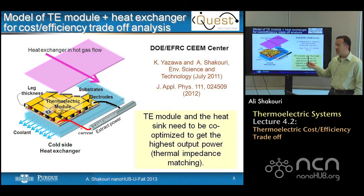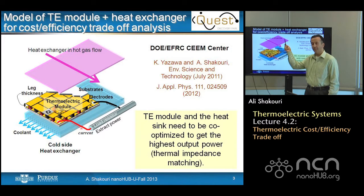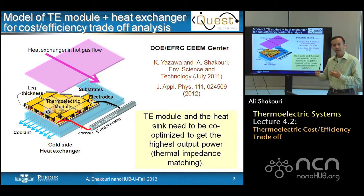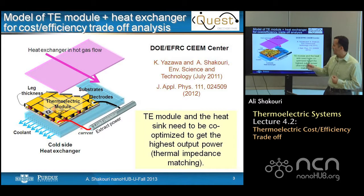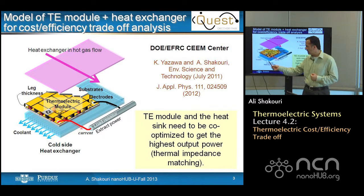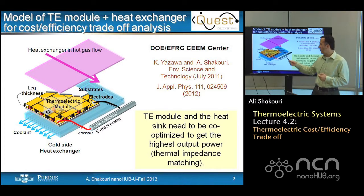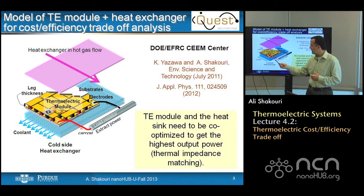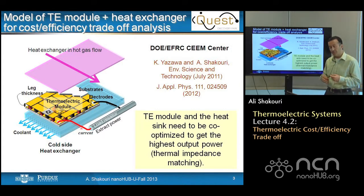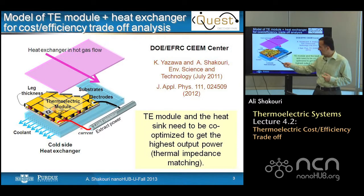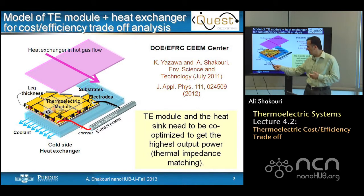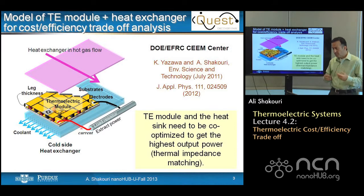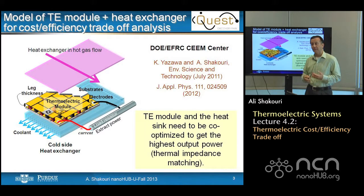Let's start by considering a waste heat recovery application. We have some sort of a heat source that is available — for the moment we assume this is waste heat, so it's free energy. The question is how we can use that by putting a thermoelectric next to it. The thermoelectric generates power from a temperature difference. If you just stick it to a hot side without doing anything special, all of the module will be hot, so no power comes out. We need a temperature gradient, so we need to put a heat exchanger on the other side, and typically we need to do some work forcing air or water through the heat exchanger to ensure a good temperature difference. So that optimization of thermoelectric with heat exchanger needs to be done together.